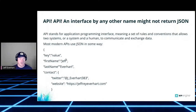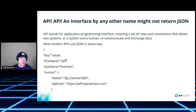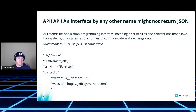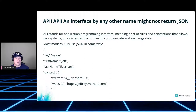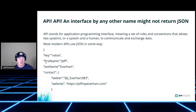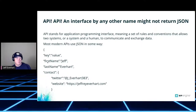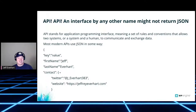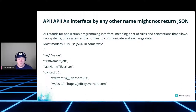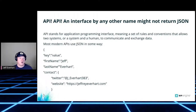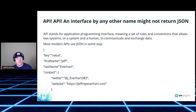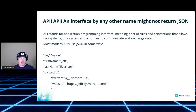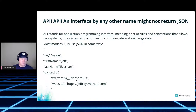Most modern APIs use something called JSON data to transmit and interact. JSON looks very much like a JavaScript object literal - we have curly braces and inside we have key-value pairs. On the left side of the colon we have a key, which says what it is, and on the right side we have the value. Here we have an object that maybe represents me as a user, with a 'firstName' property with the value 'Jeff' and 'lastName' with 'Everhart'.